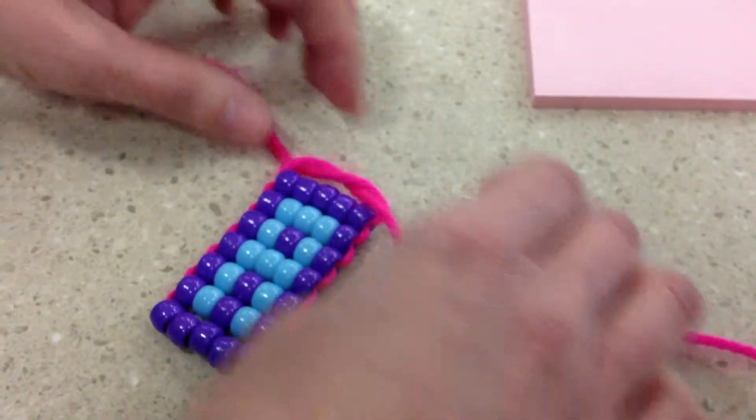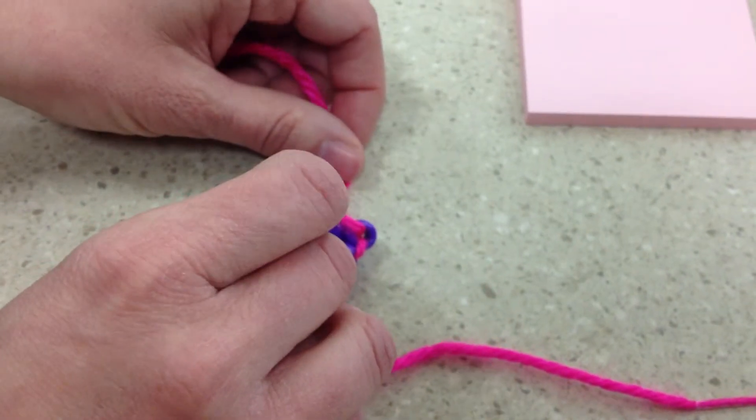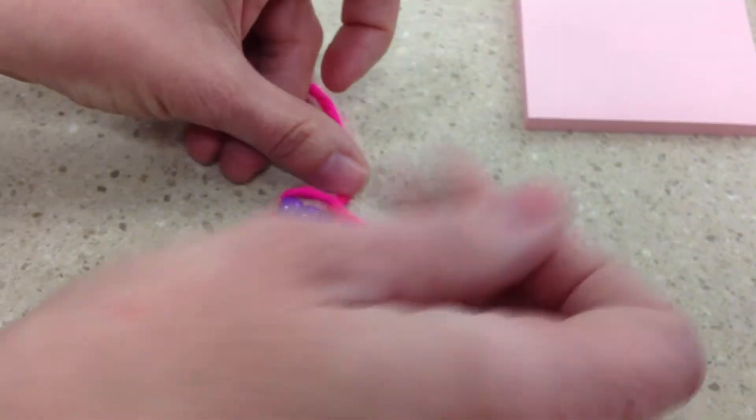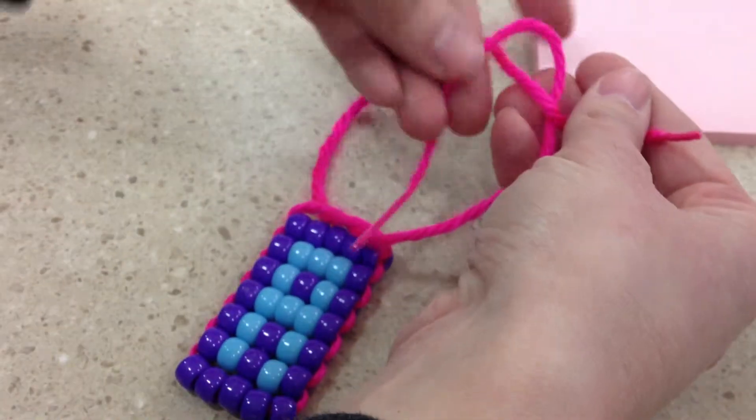So we want to tie it like you're tying a shoe first. And you want that knot there. And then we want to just do a double knot. So you're going to tie it again.